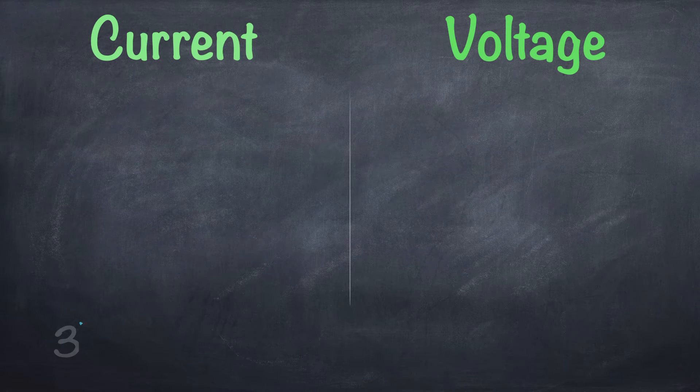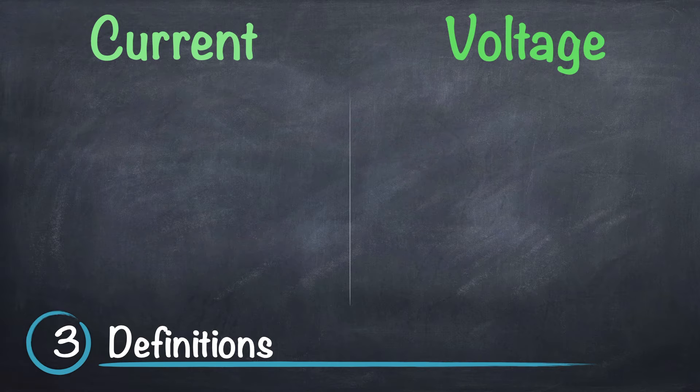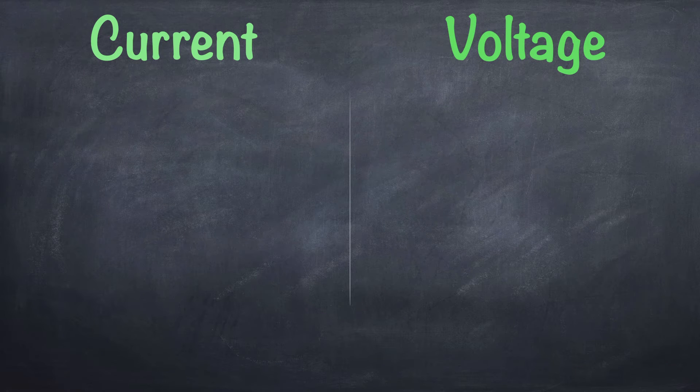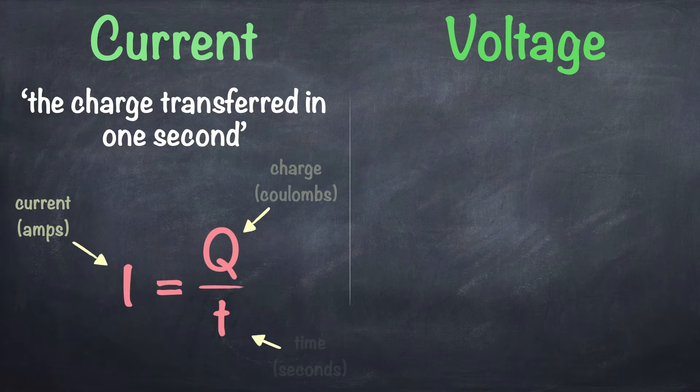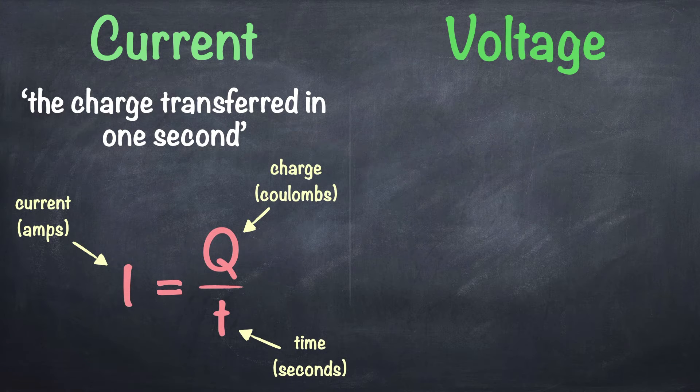Number three, definitions. First off, current is defined as the charge transferred in one second. You can use this equation to help you work out the definition but just make sure that you know the definition for current as well as this one for voltage.